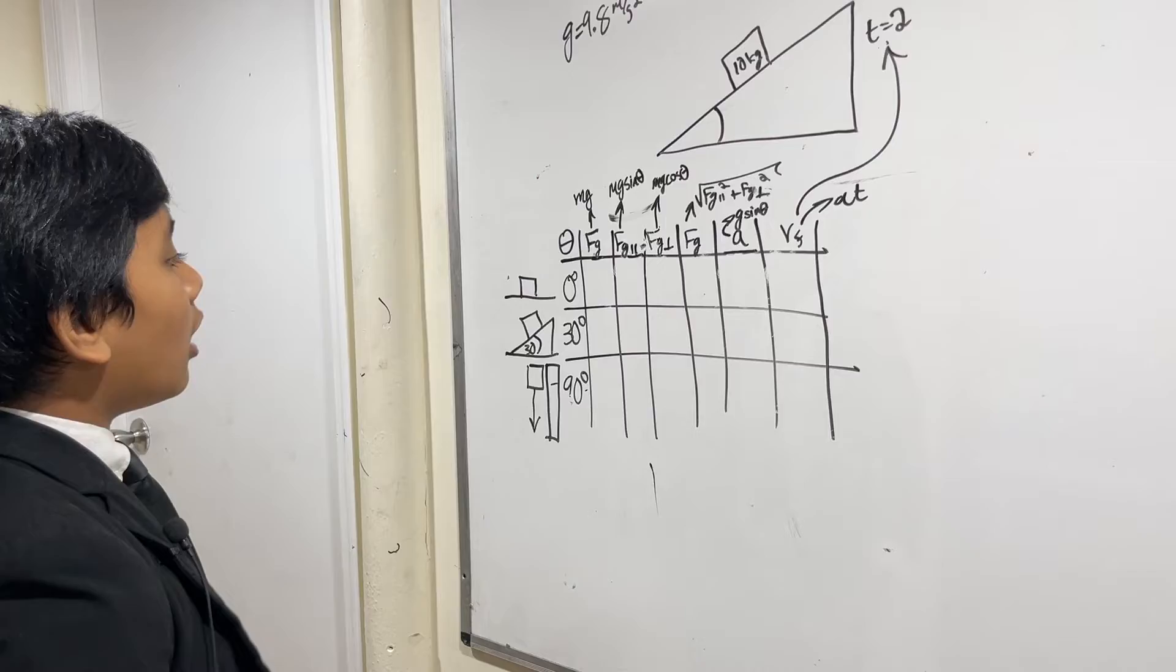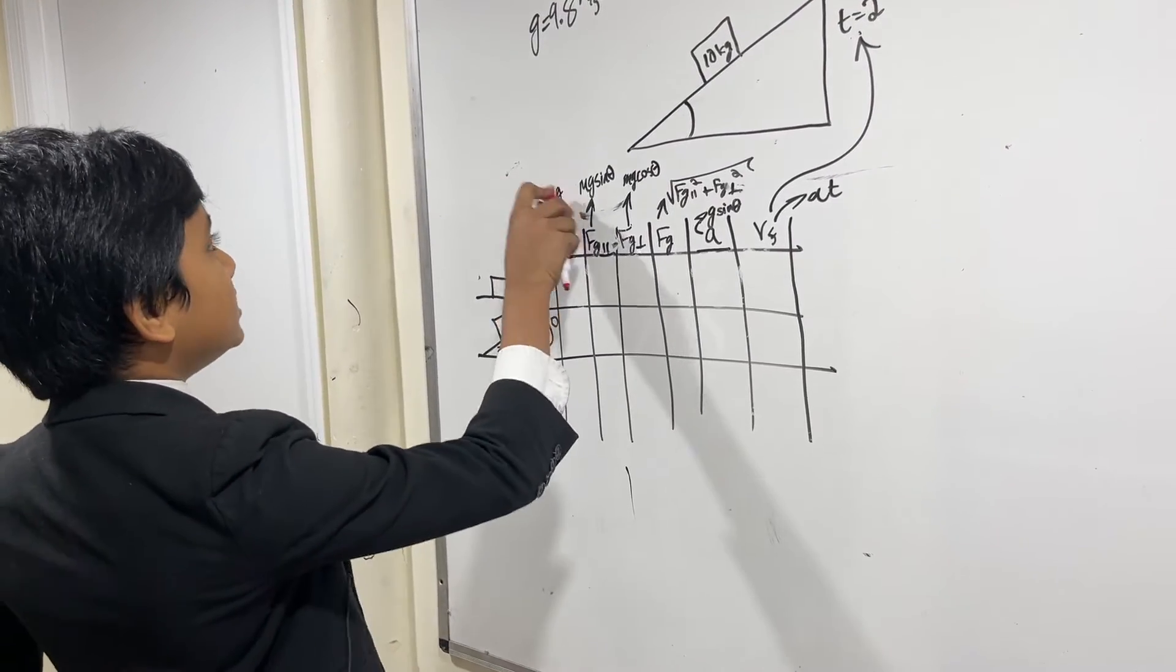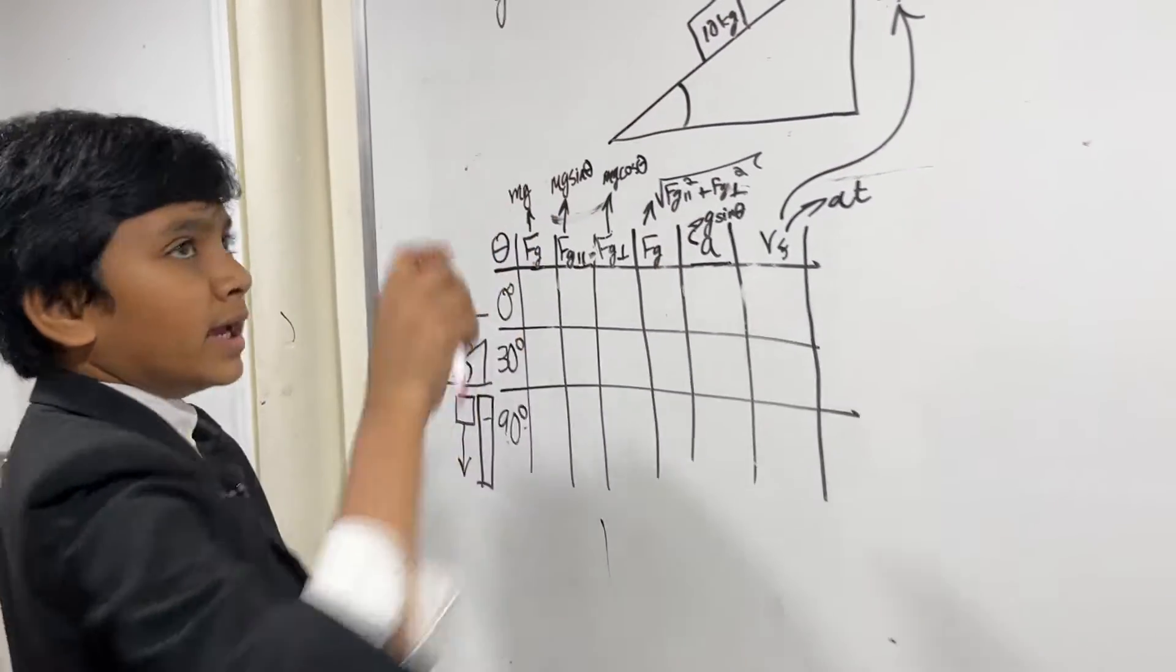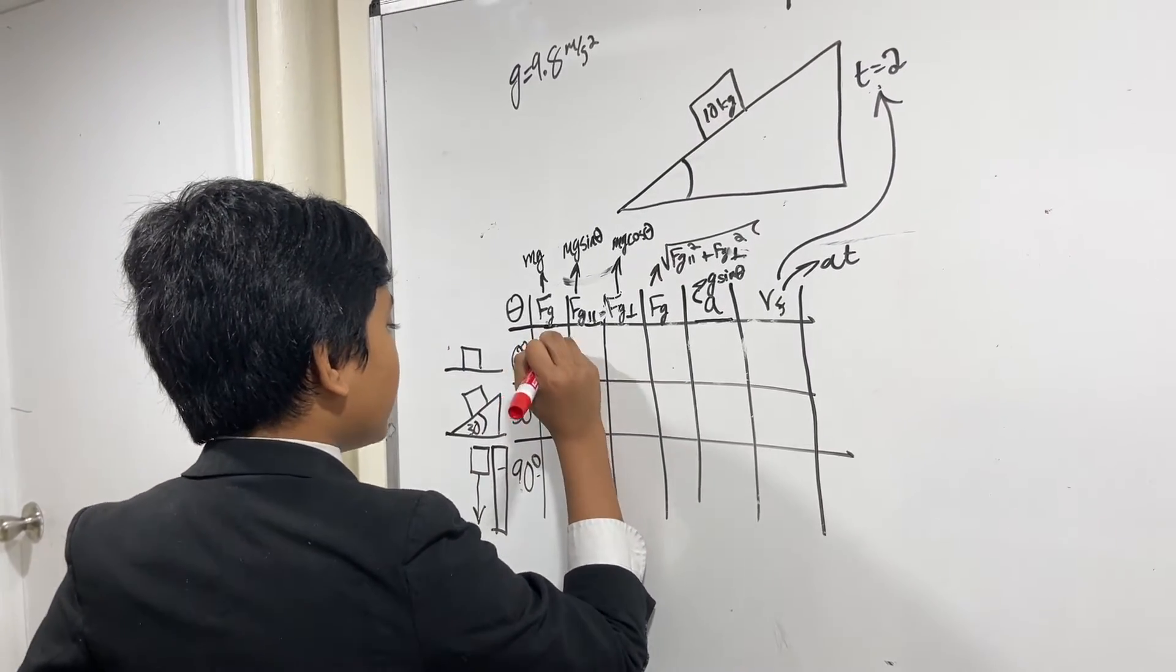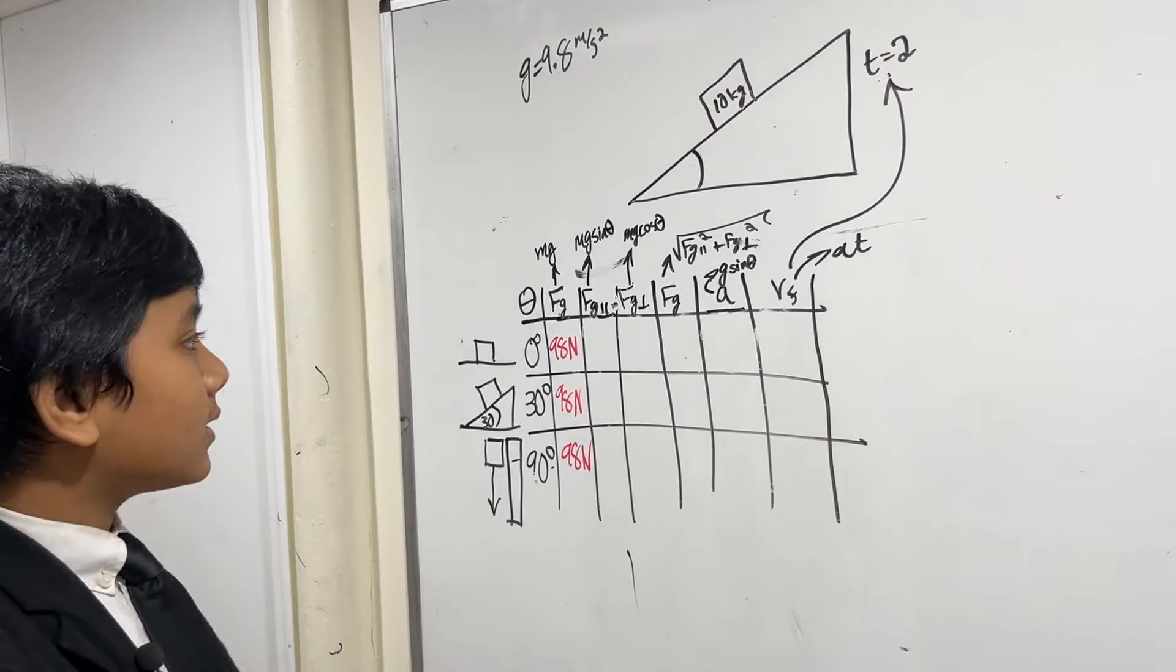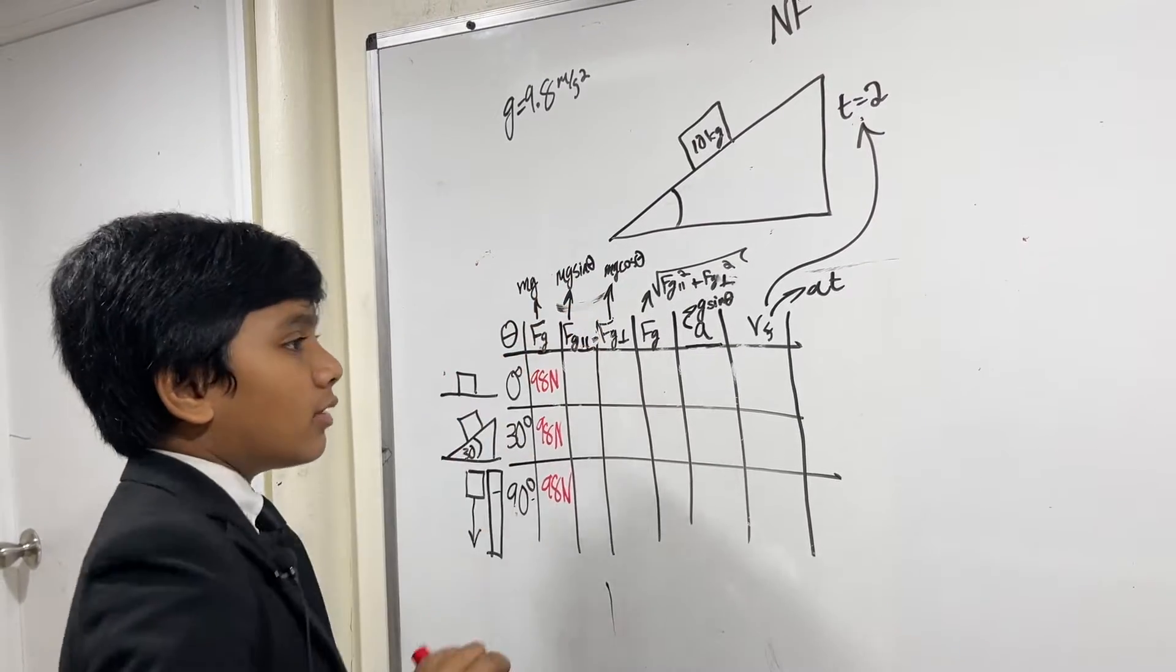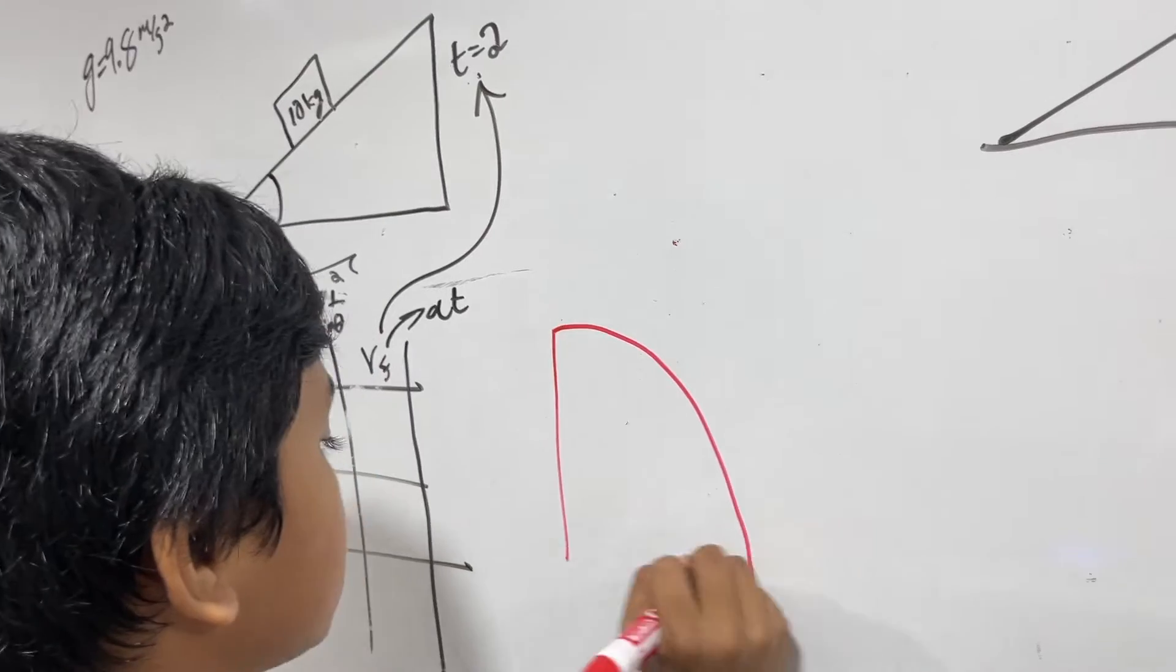FG is always going to be constant, no matter what. So what's M times g? Well, we have M which is 10, and g which is 9.8. 10 times 9.8 is 98. So we can write 98 newtons in all of these spaces. So now, what about Mg sine theta? Well, let's think back to our unit circle for this one, just the first quadrant.